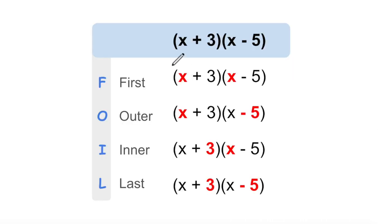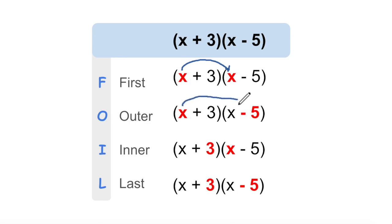Now let's look at how FOIL works. Here we have two binomials multiplied by each other. What we're going to do is distribute each of the two terms inside of the first parentheses across each of the two terms inside the second parentheses. We call this FOIL because we're going to multiply the first term — the x — times the first term in this one. Then we're going to multiply the outer, which is the x, times the last term here, the 5. And then we're going to multiply the inner terms — the 3 — times each of the two terms in the second parentheses: 3 times x and 3 times negative 5. Note that the negative sign is part of that second term.